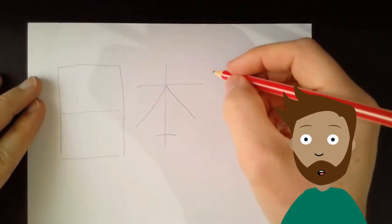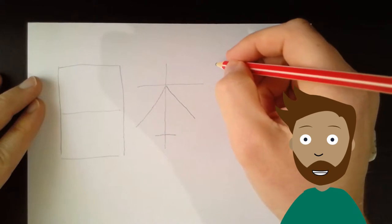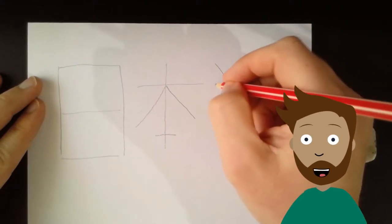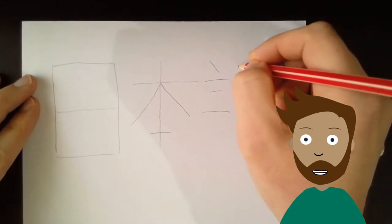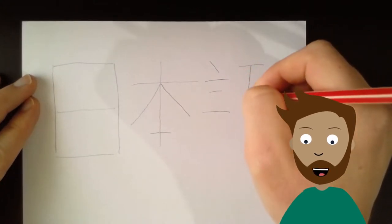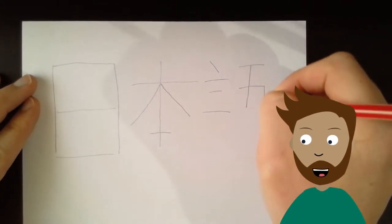So together these characters mean Nihon for Japan, but I have one more to write and that is Go which means language. Go has four parts called radicals and each radical has a meaning.